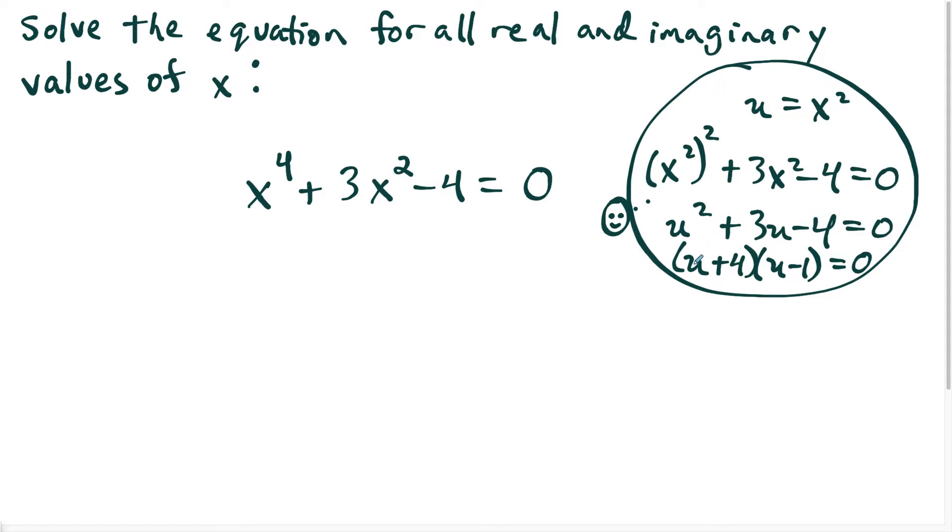So notice here if u is equal to x squared, this brings me right to the step then where I could factor this and set it equal to zero, that instead of u plus four, u is equal to x squared. So I have x squared plus four times x squared minus one. So this will factor the quartic equation here into these two factors.